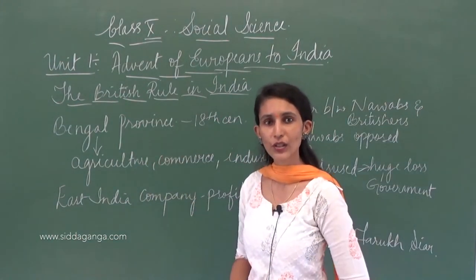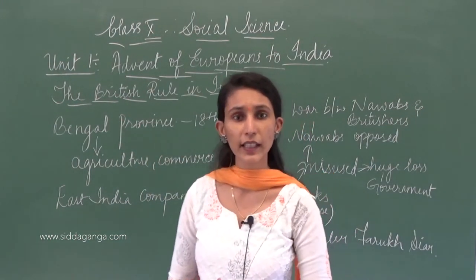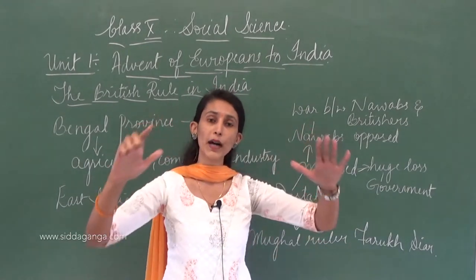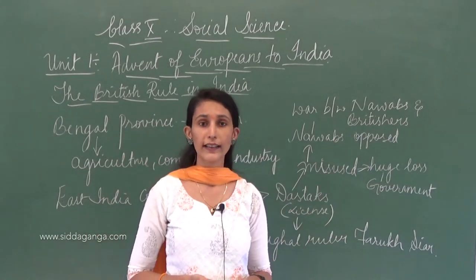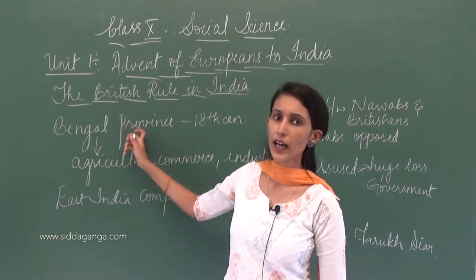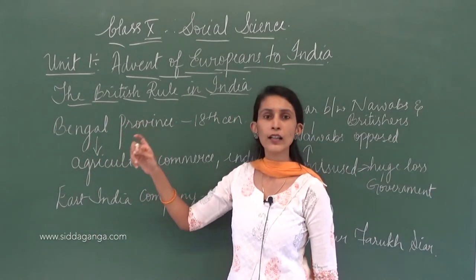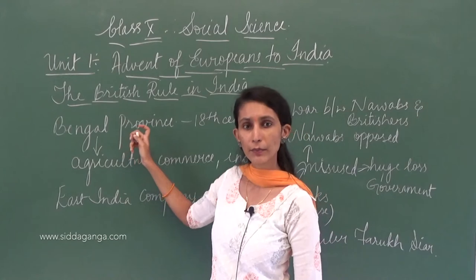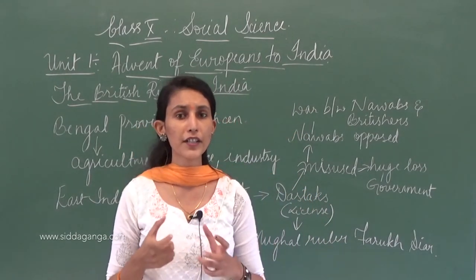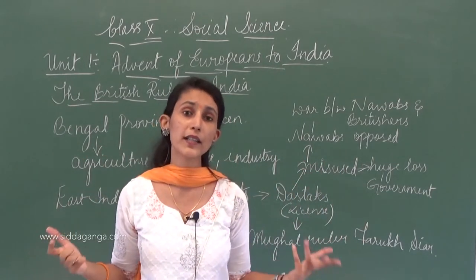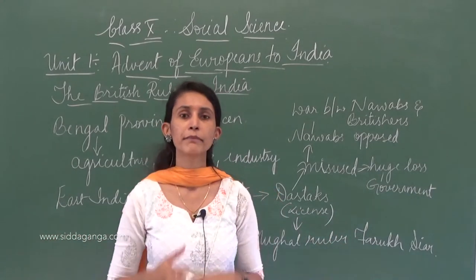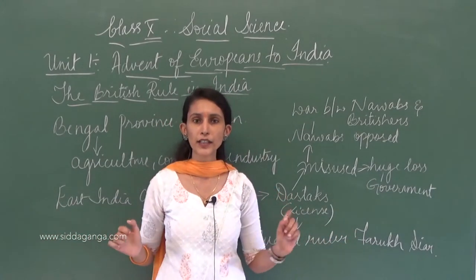Today we are going to study British rule in India — how did the British rule? They had already tried to possess the southern part of India, and now they wanted to possess the northern part as well. So they went to the Bengal province and wanted to capture it, trying to make their kingdom very vast — capturing everything and bringing it all under British rule.